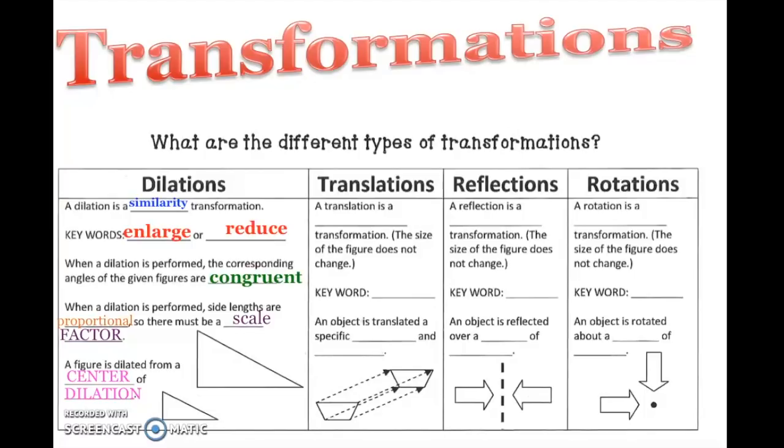A translation is a congruence transformation. All that means is the side of the figure does not change. A keyword: slide. An object is translated a specific distance and direction.